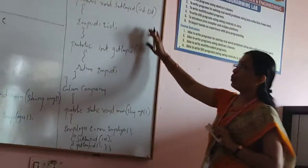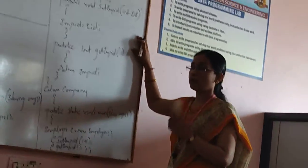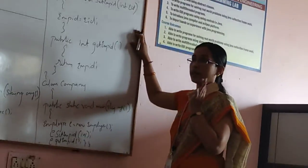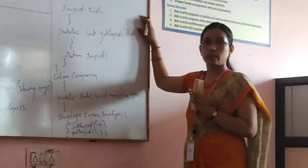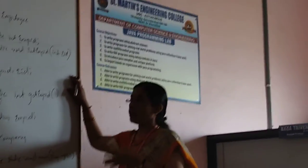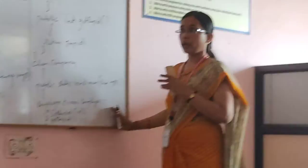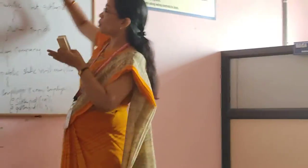This is how we can achieve encapsulation. Encapsulation does not allow direct access to variables declared in the class. With the help of public setter and getter methods, we can get access to the variables declared as private in the class Employee. In this way, encapsulation binds the data and the methods in a single unit. This is all about encapsulation. Thank you so much.